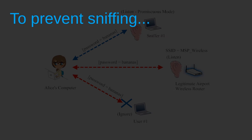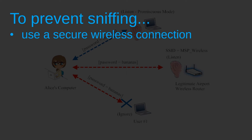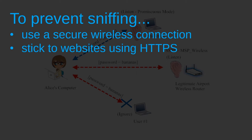Alice can prevent sniffing in several ways. One is to use a secure wireless network. On a secure wireless network, all users still have access to each other's internet traffic, but this traffic is encrypted so that other users aren't able to read it. Another way to prevent sniffing is to stick to websites that use HTTPS — a set of communication rules that encrypts all traffic between users and a given webpage. The traffic is still sniffable on the wireless network, but it's garbled by the encryption.